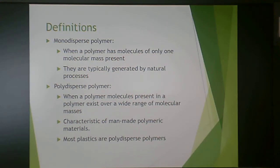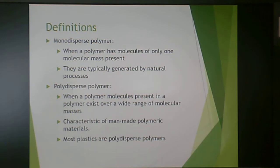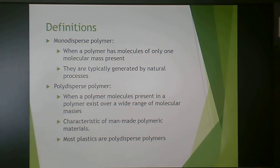Monodispersity is typically only seen with natural processes. For example, the enzymes in your body are always the same molecular weight — if they weren't, that would be a big problem. Certain proteins are always the same molecular weight. When it comes to man-made polymers, we're usually looking at a polydispersed polymer, where the polymer molecules span a wide range of molecular masses. This is very characteristic of man-made versus natural polymeric materials.